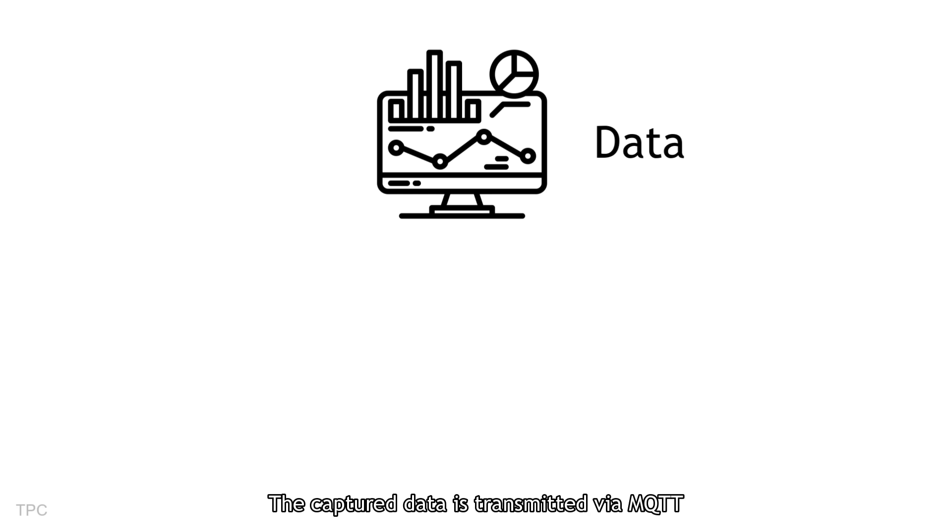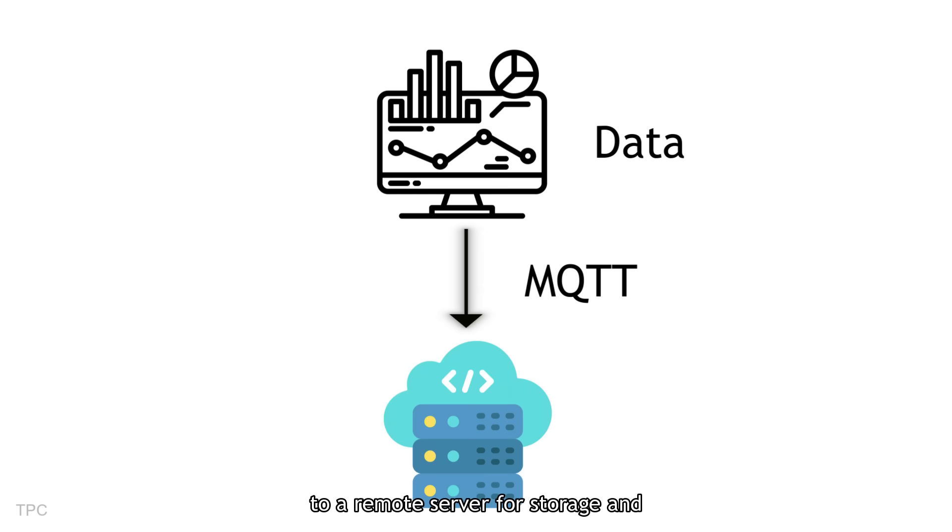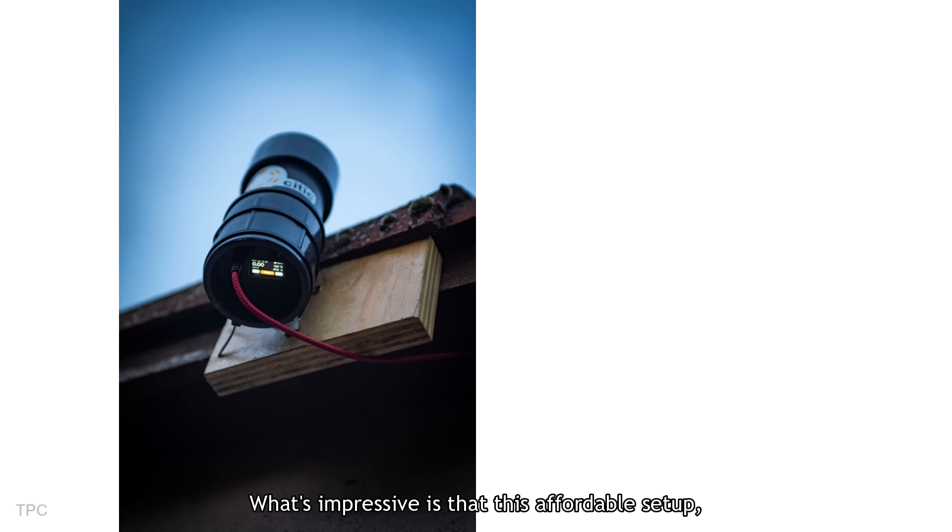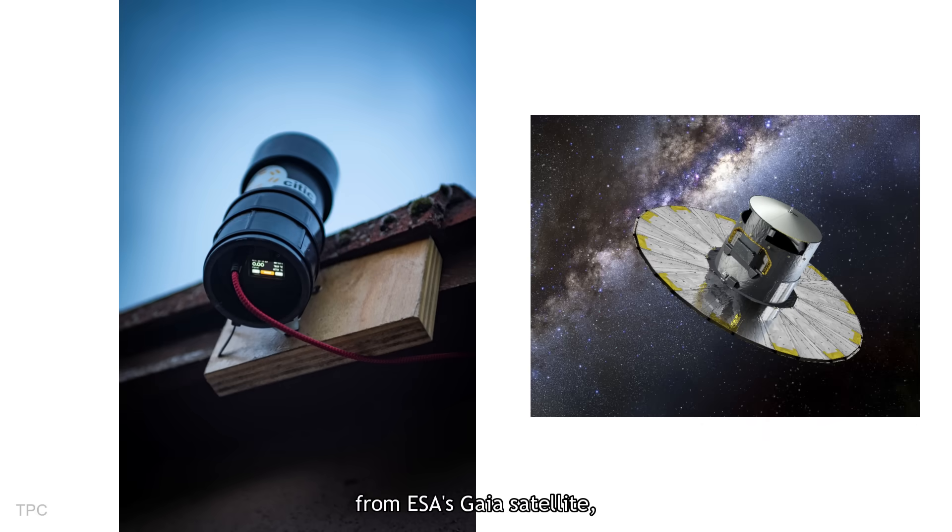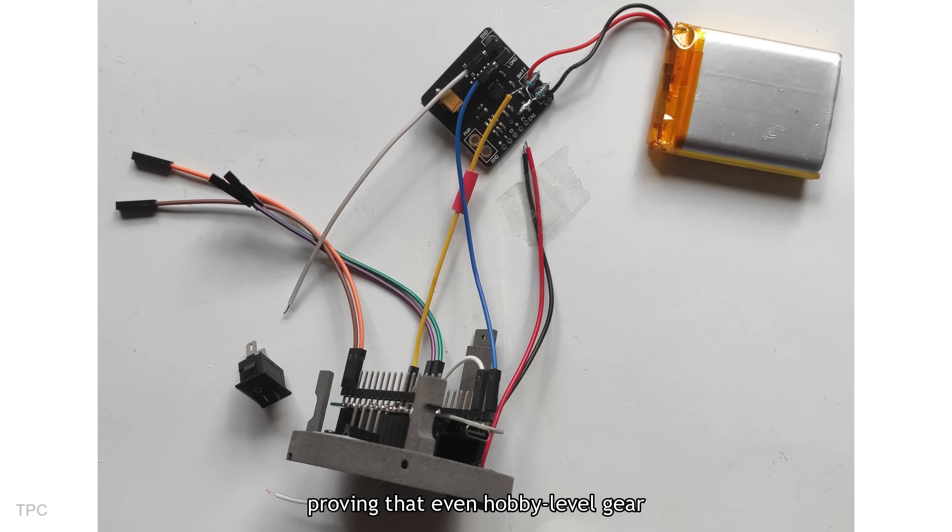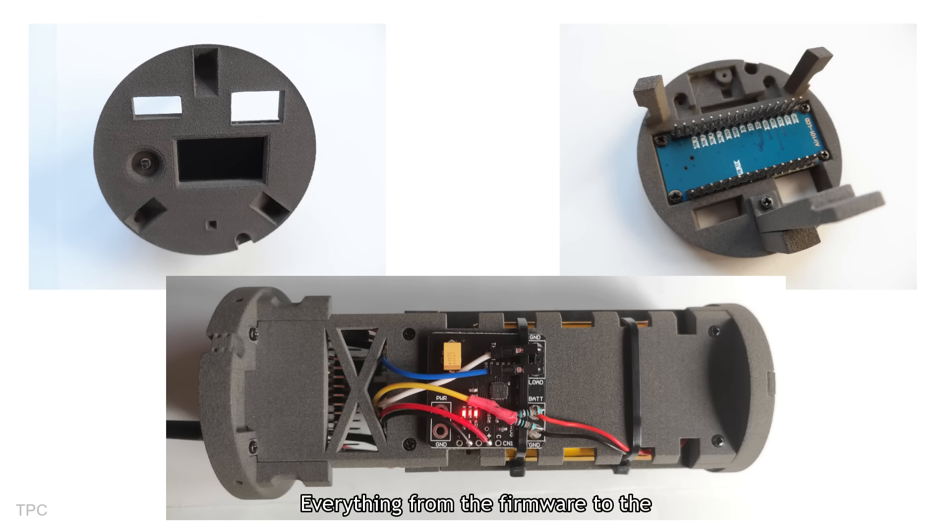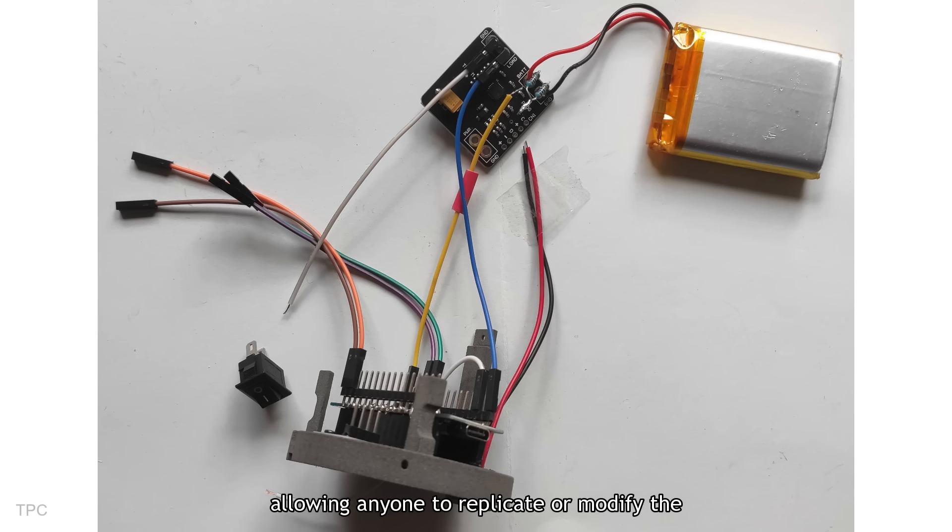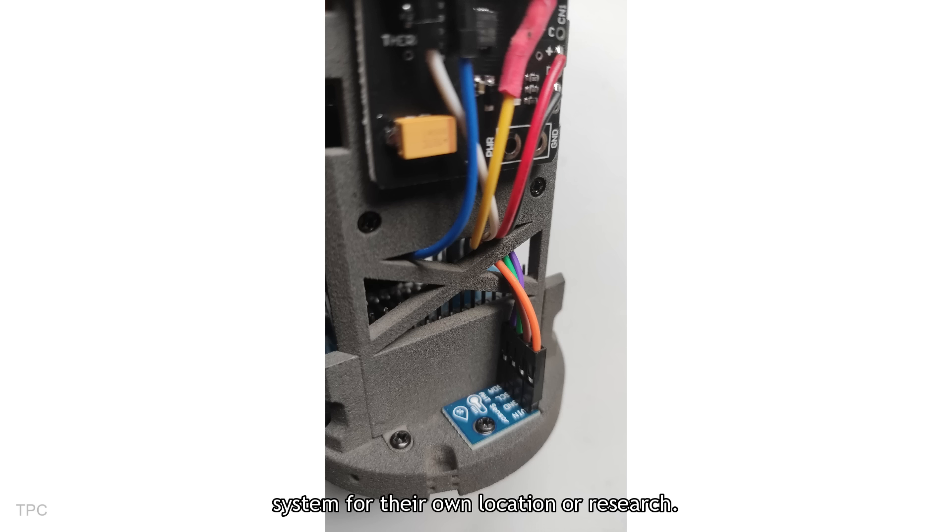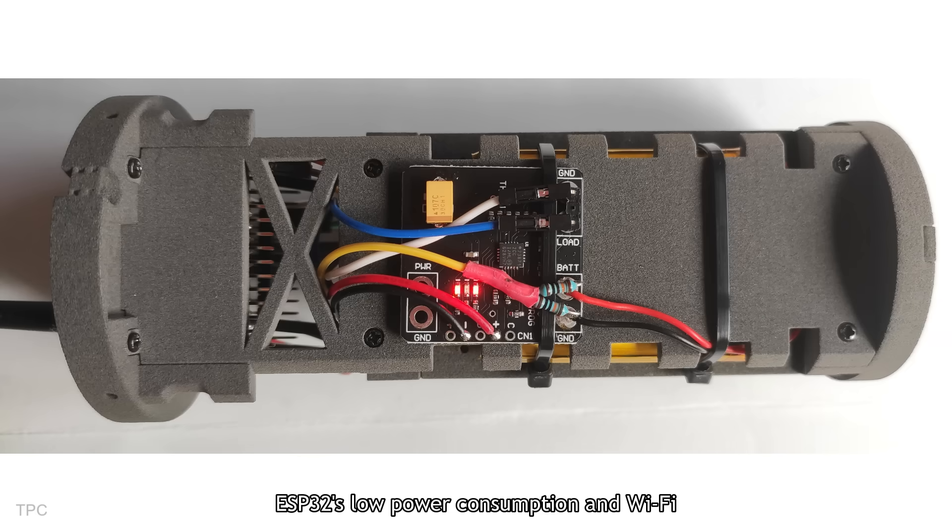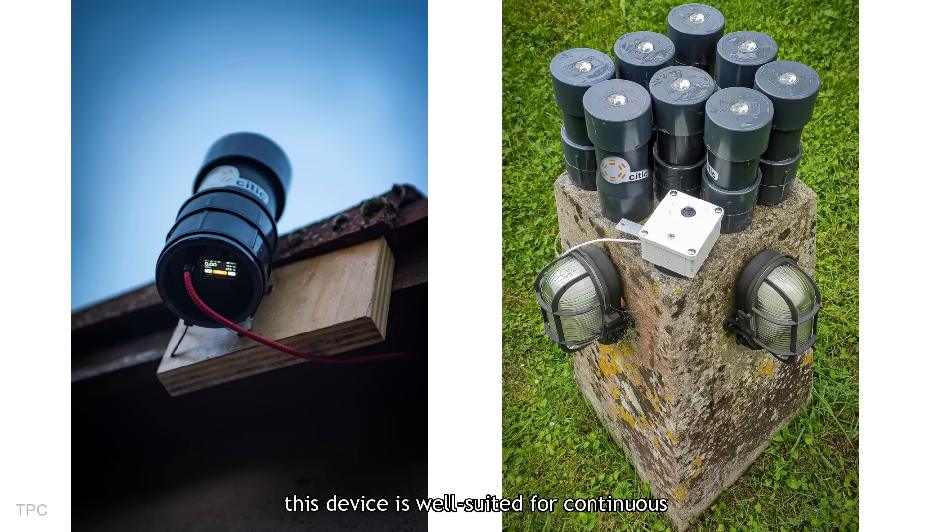The captured data is transmitted via MQTT to a remote server for storage and analysis. What's impressive is that this affordable setup, costing under $65, produced results that closely match those from ESA's Gaia satellite, proving that even hobby-level gear can yield scientifically reliable data. Everything from the firmware to the 3D-printed case design is open-source, allowing anyone to replicate or modify the system for their own location or research. And because of ESP32's low power consumption and Wi-Fi connectivity, this device is well-suited for continuous outdoor operation.